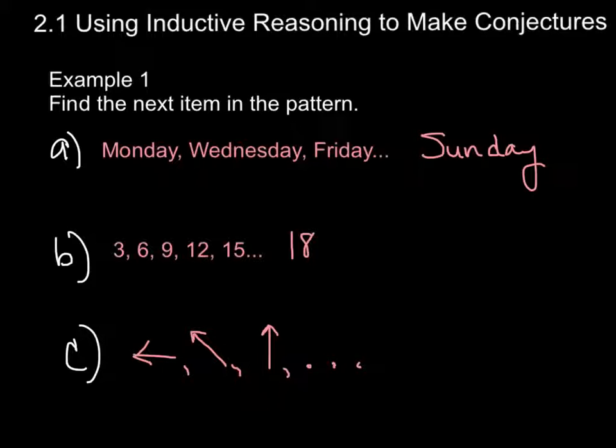Alright, what would be the next item in this pattern? Hopefully, you'd write an arrow that looks like that. In this pattern, the figures rotate clockwise, approximately 45 degrees each time. Therefore, the next figure is the arrow that I have drawn.